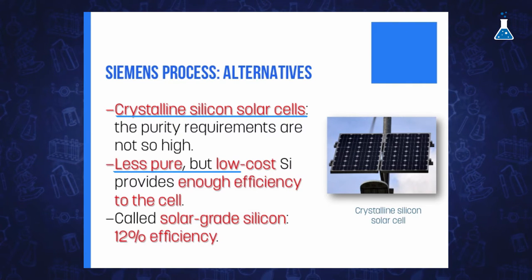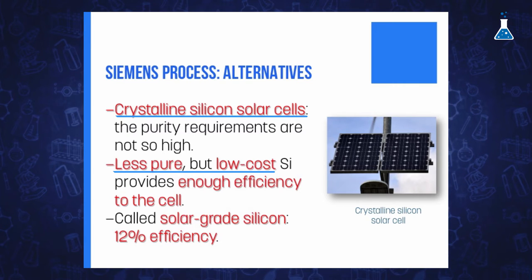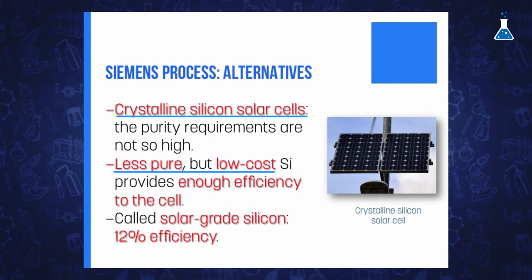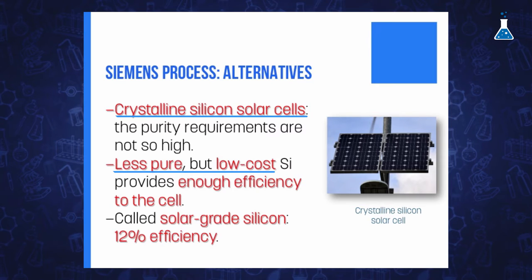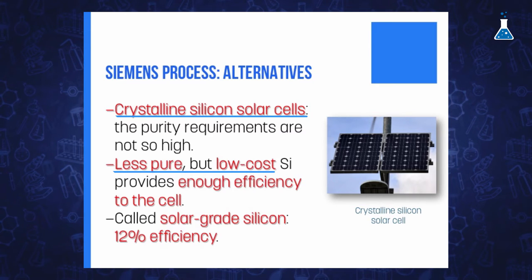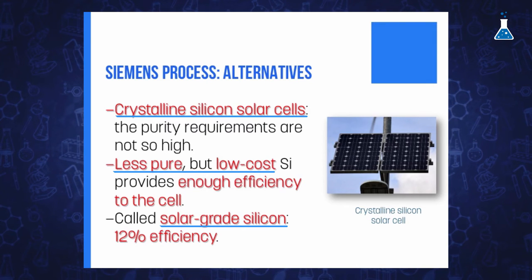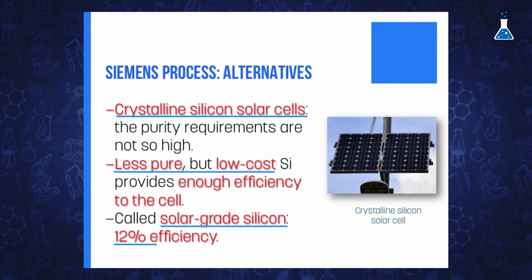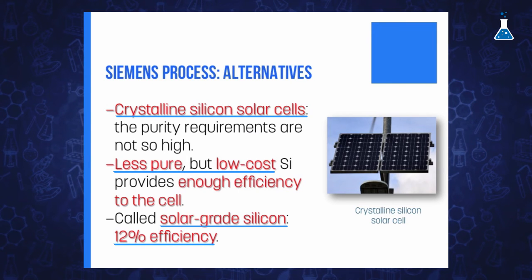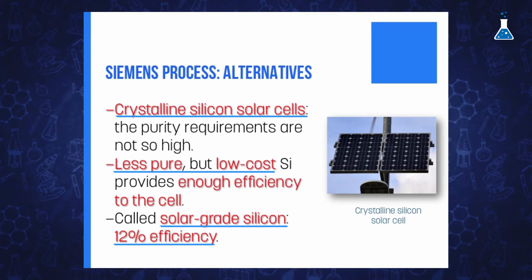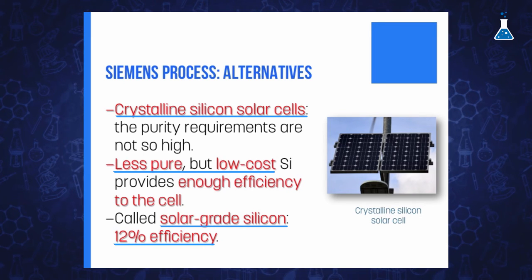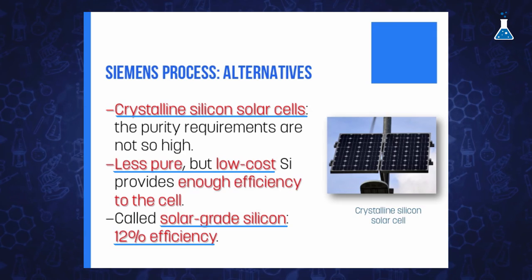With this type of silicon, which is called solar grade silicon, solar cell efficiencies in excess of 12% have been reported. Obviously, high efficiency solar cells greater than 12% are fabricated using wafers made of semiconductor grade material. Therefore, according to the desired specifications of the solar cell, the purification process will be developed to a lower or higher grade.